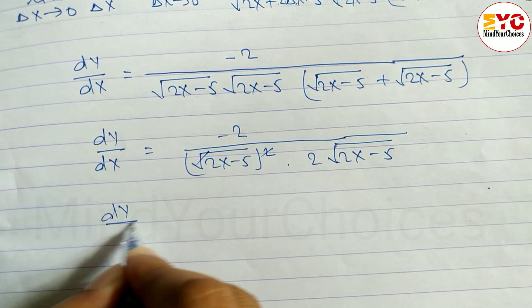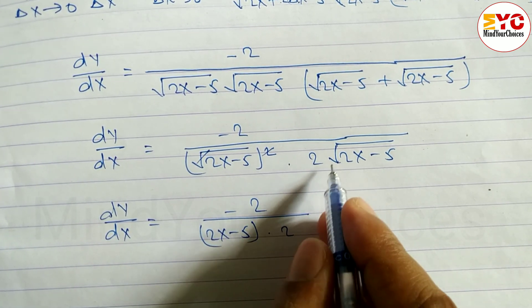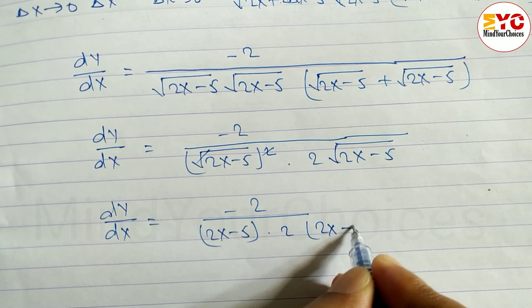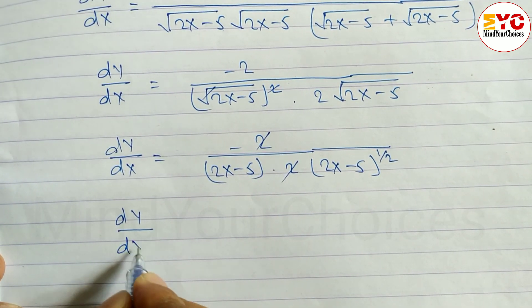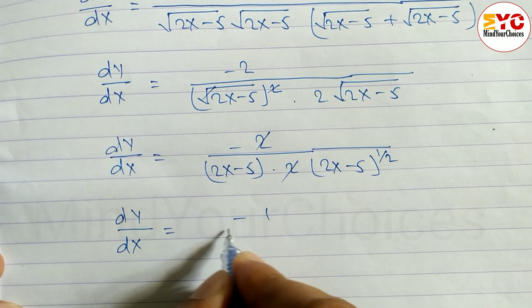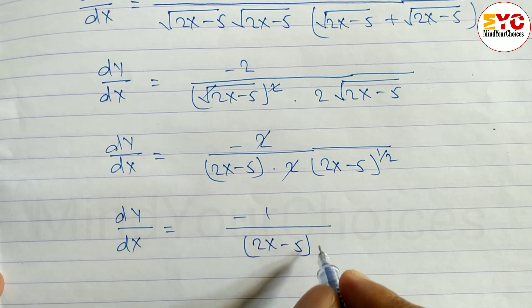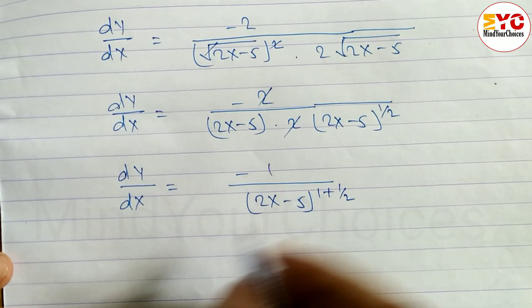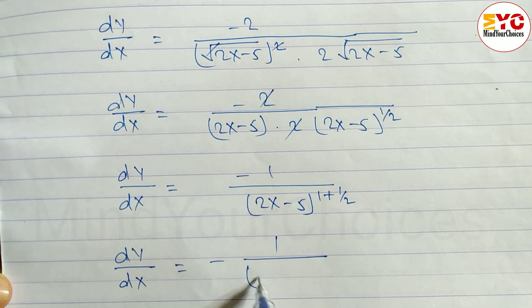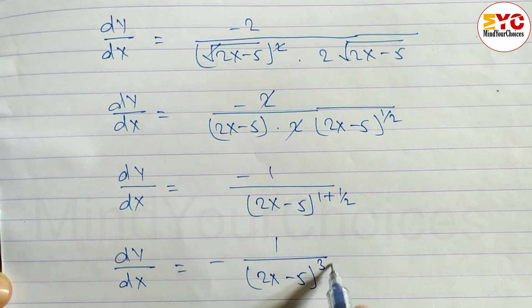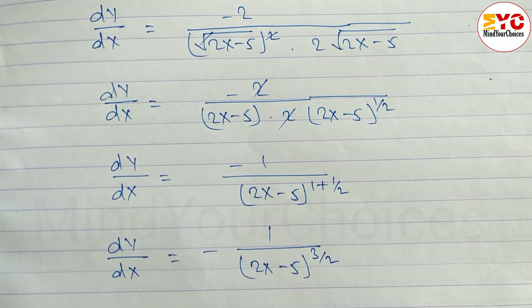After simplification: dy/dx equals minus 2 divided by (2x - 5) times 2, writing root under (2x - 5) as (2x - 5)^(1/2). The two and two cancel, giving dy/dx equals minus 1 divided by (2x - 5) times (2x - 5)^(1/2). Adding the powers: dy/dx equals minus 1 over (2x - 5)^(3/2). This is your answer.